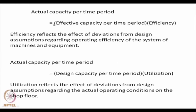The relationship between actual, effective, and design capacity is captured by two terms: efficiency and utilization. Efficiency times effective capacity equals actual capacity, and utilization times design capacity equals actual capacity. Efficiency reflects deviations from design assumptions regarding operating efficiency of machines and equipment, whereas utilization reflects deviations from design assumptions regarding actual operating conditions on the shop floor.